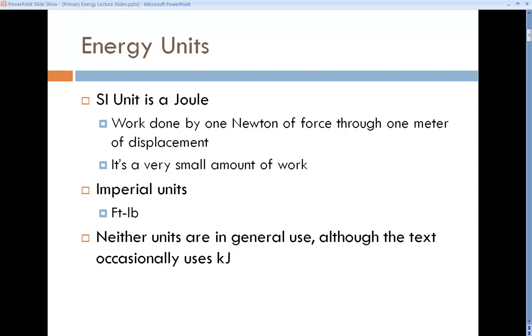The SI unit for energy or work is a joule. It's defined as the work done by one newton of force through one meter of displacement. That's a very small amount of energy. The equivalent imperial unit is a foot-pound, one pound force acting through one foot of displacement. Even though those are the fundamental units, they're not in general use.